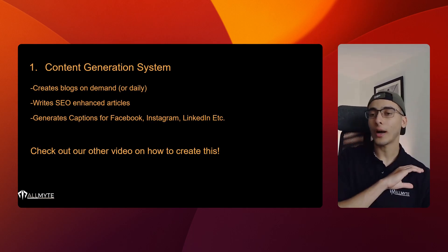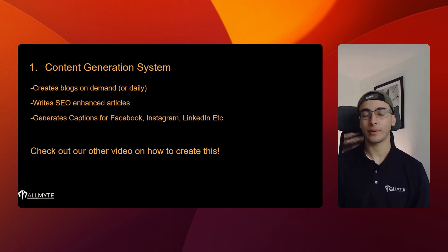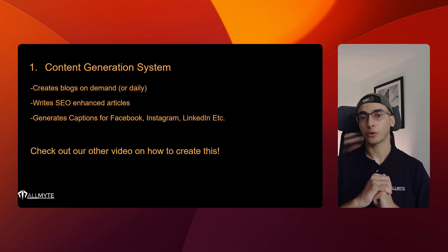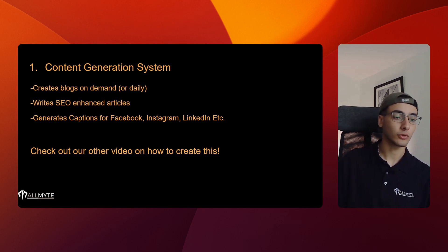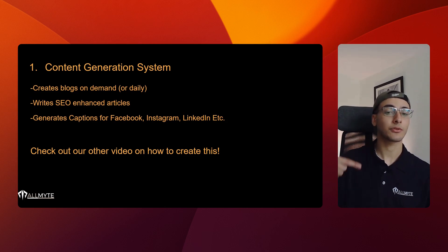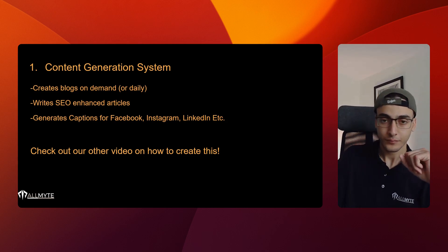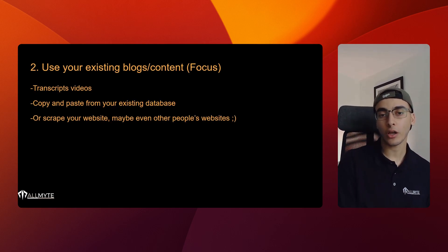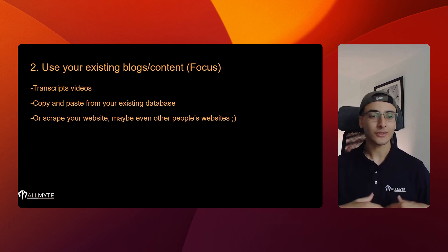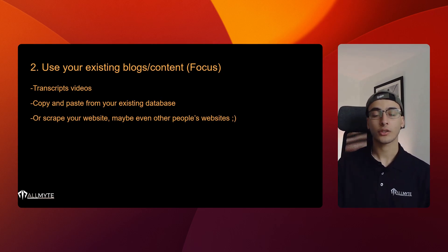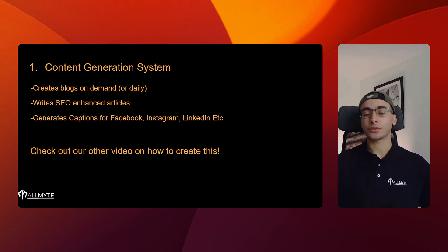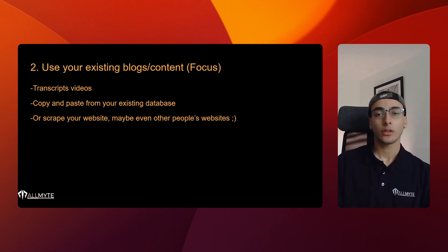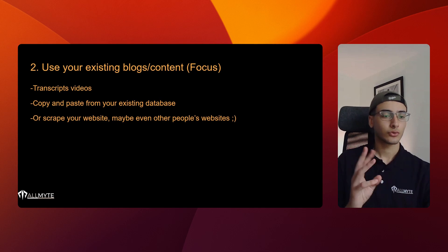Now, how do we actually go about implementing this? There are two options. The first is if you don't have a content generation system at all — we actually created an entire video where I showed you exactly how you can use Airtable and Make to automatically create SEO-enhanced blogs for your construction business on demand. You can connect that to this system to automatically generate captions and post everything. For this specific video, I'm going to assume you already have existing blogs or content you want to post about on social media.